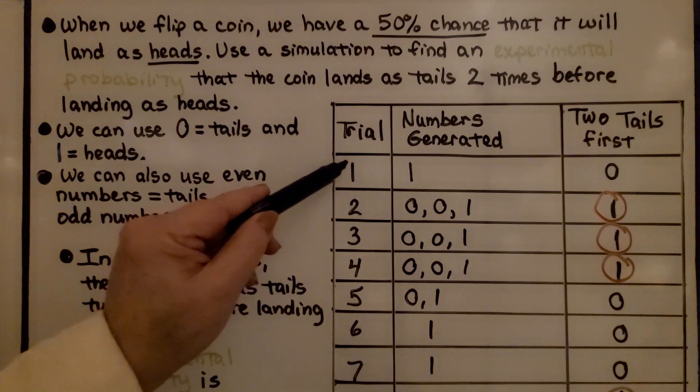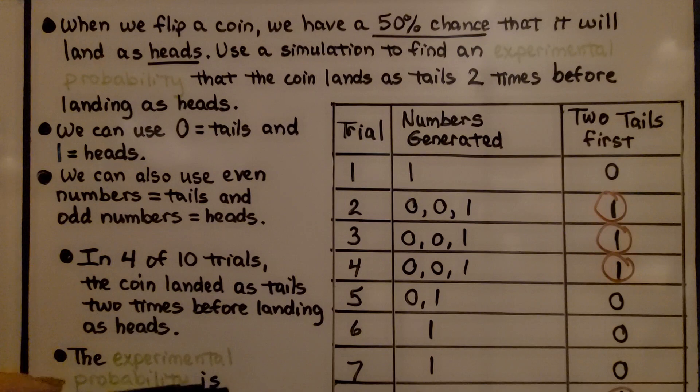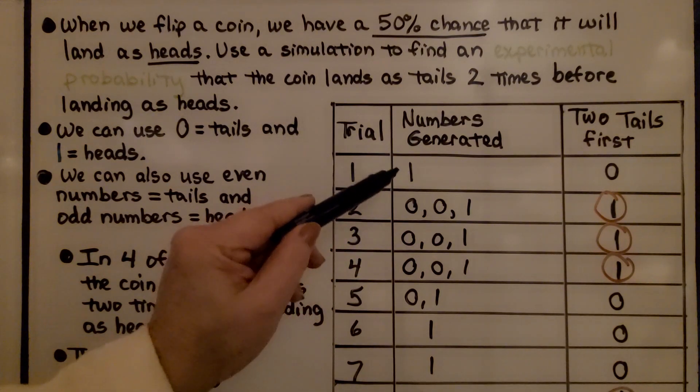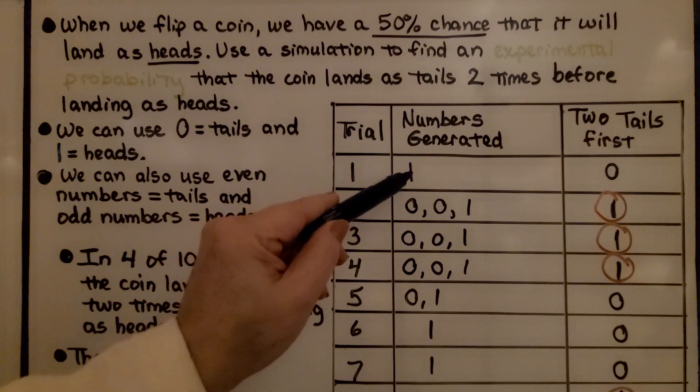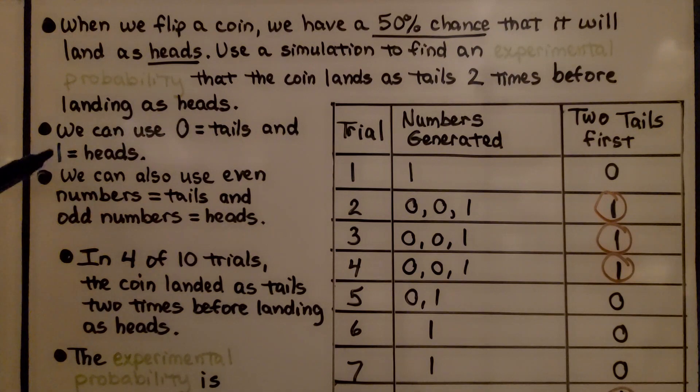So, in the first trial, I generated either a 0 or 1 with my Texas Instrument Graphing Calculator. And I got a 1 right away. But I don't want just a 1. Like in the other experiment, I want 2 tails, 2 zeros, and then a 1.